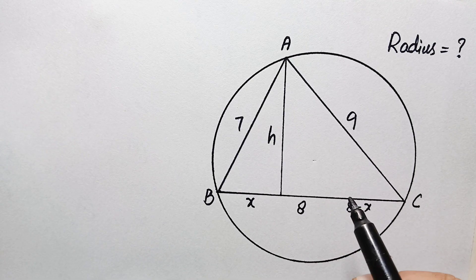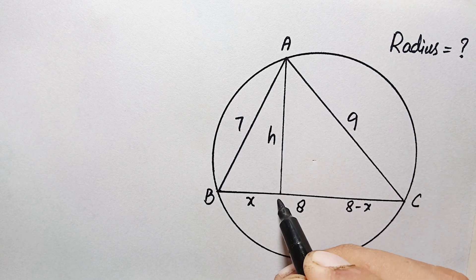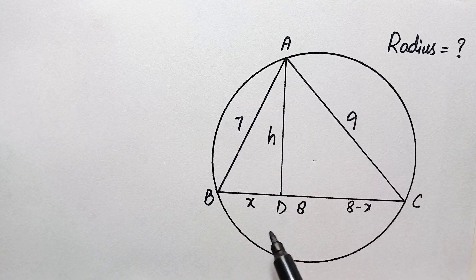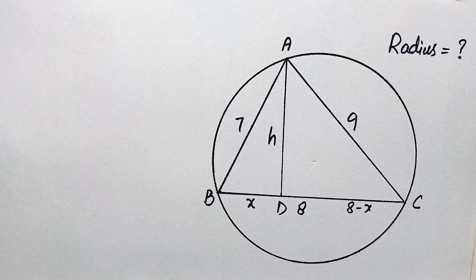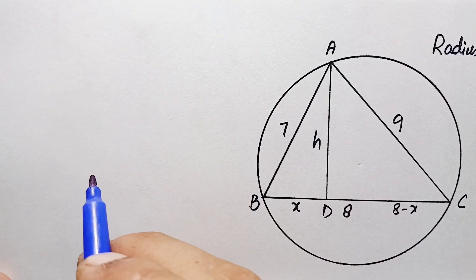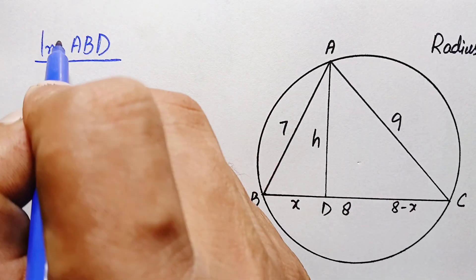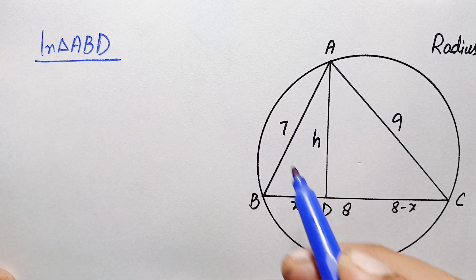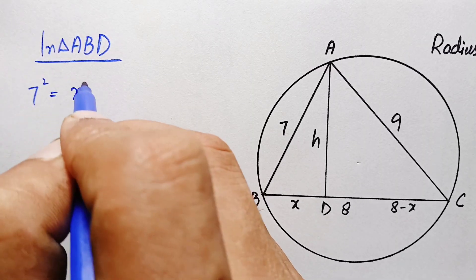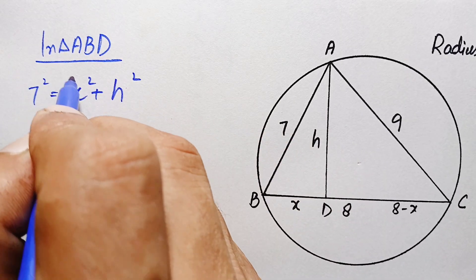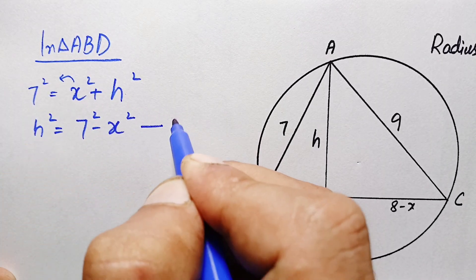Our target is to find the radius of this circle, so we will try to find out the value of x and the value of h. Let us suppose this is point D, so we have two right angle triangles: triangle ABD and triangle ADC. We will apply the Pythagorean theorem to both. In triangle ABD: the hypotenuse squared equals base squared plus perpendicular squared, so 7² = x² + h², which gives h² = 7² − x² = 49 − x². Let this be equation number one.